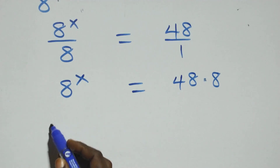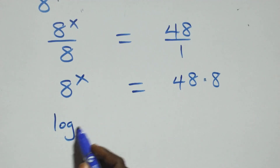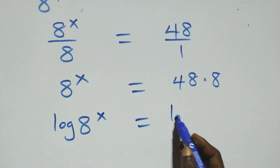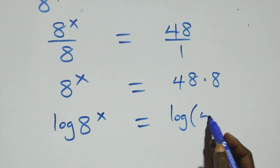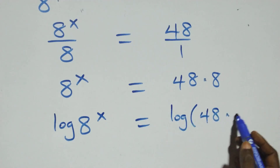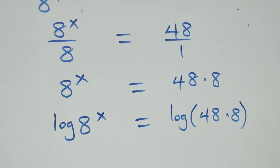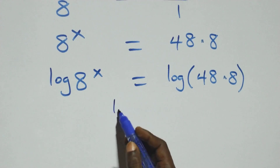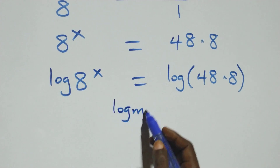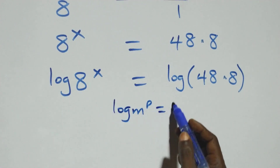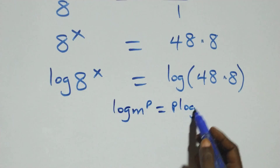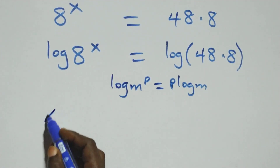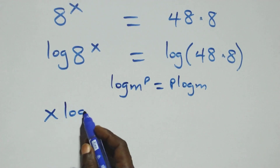Next step: we take the log on both sides. We have log of 8 raised to power x equals log of 48 times 8. Then we apply the power rule of logarithms: log m raised to power p is the same thing as p log m. So what we have becomes x log 8.